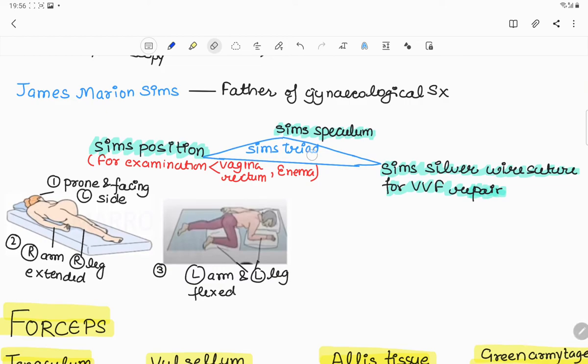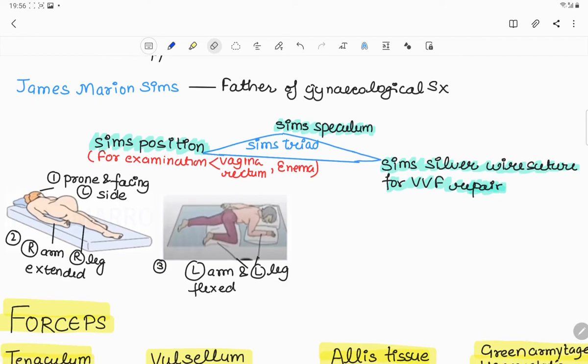And what is the SIMS triad? Number one is SIMS speculum. Number two is SIMS position, used for examination of vagina and rectum and to give enema to the patient. In this we ask the patient to lie in the prone position facing left side with right arm and leg extended and left arm and left leg flexed. Number three contribution is SIMS silver wire suture for vesicovaginal fistula repair.